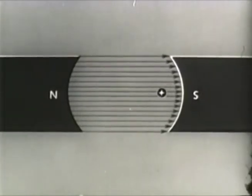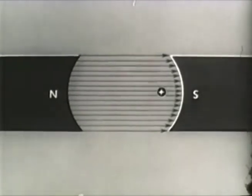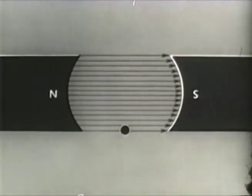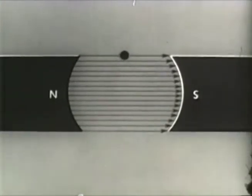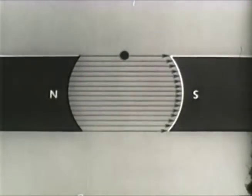As the conductor keeps turning, the number of lines cut increases so that at a quarter turn or 90 degrees, the maximum number is being cut and maximum EMF is generated. Again, at 180 degrees, no lines are cut — no EMF. We reach a maximum again at 270 degrees. And finally, again at 360 degrees, no lines are cut. The conductor has rotated 360 mechanical degrees, which correspond in this instance to 360 electrical degrees.